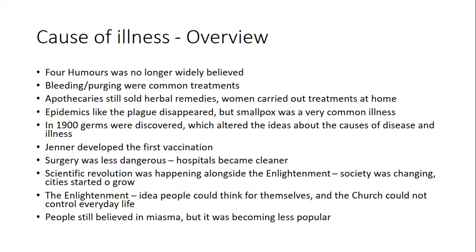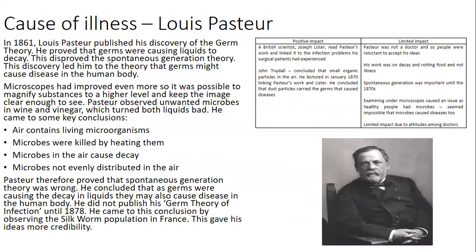I'm going to go through a range of different people, their ideas, the positives and the negatives, just in case you've got a 16-marker on these key people. First, Louis Pasteur. The key things you need to know are what they did and the impact, both positive and negative. In 1861, Louis Pasteur published his germ theory. This was to disprove an old idea called spontaneous generation — that germs appeared from nothing, basically from rotting. Pasteur proved that germs were causing liquids to decay, disproving spontaneous generation, which led him to the theory that germs might be causing disease in the human body.